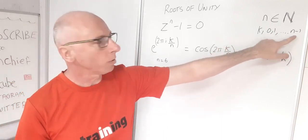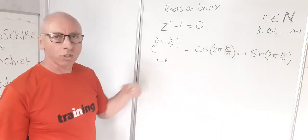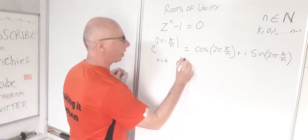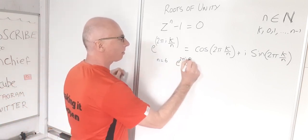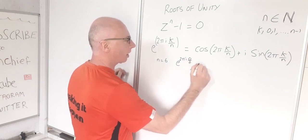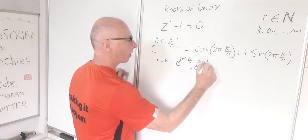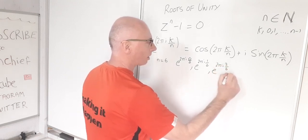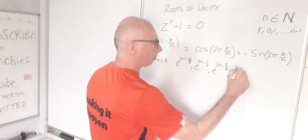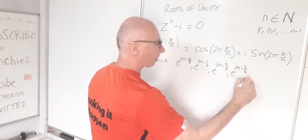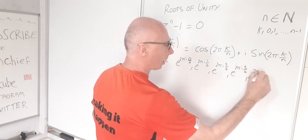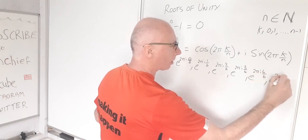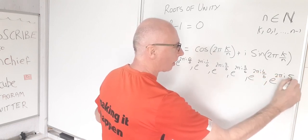For n equals 6, k runs from 0 to 5. So we have: e^(2πi·0/6), e^(2πi·1/6), e^(2πi·2/6), e^(2πi·3/6), e^(2πi·4/6), and e^(2πi·5/6).